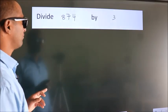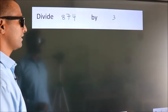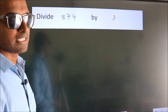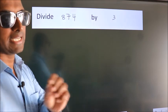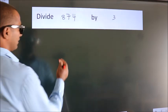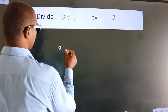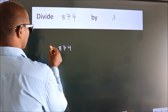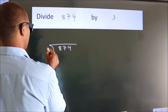Divide 874 by 3. To do this division, we should frame it in this way. 874 here, 3 here.